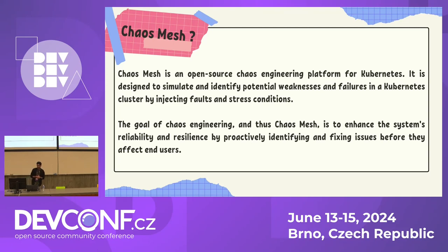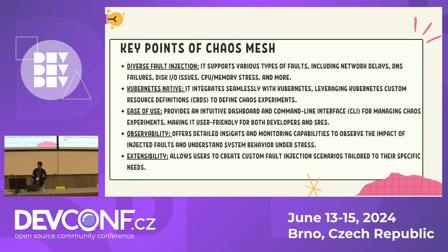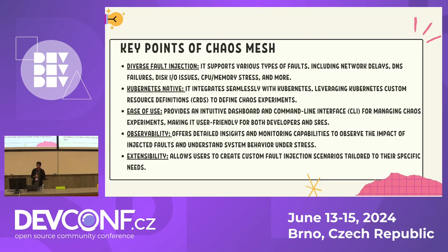Chaos Mesh is an open source chaos engineering platform for Kubernetes. It's designed to simulate and identify potential weaknesses. The goal is to identify the weakness of the system — for that we need to inject chaos: make pods down, test stress, or test the network. One important point is to identify the problem before it affects the user. Key points of Chaos Mesh include diverse fault injection, Kubernetes-native, ease of use, observability, and extensibility.